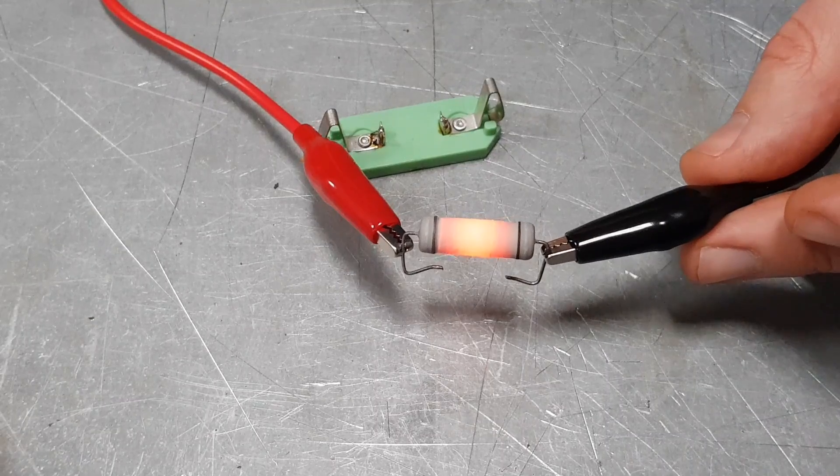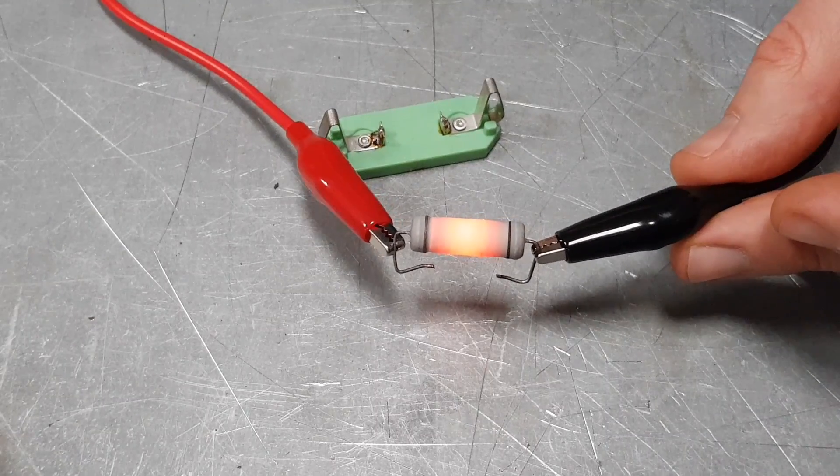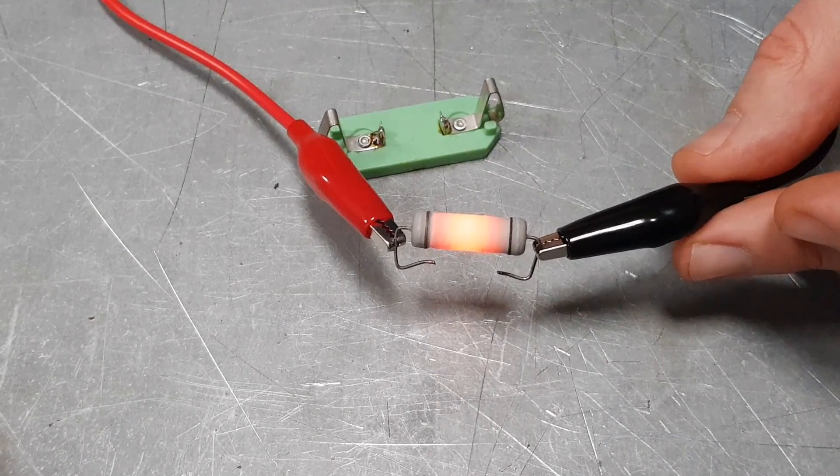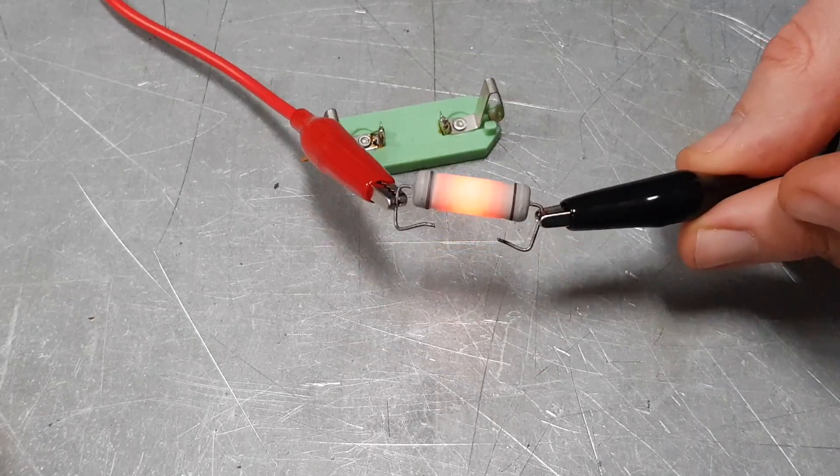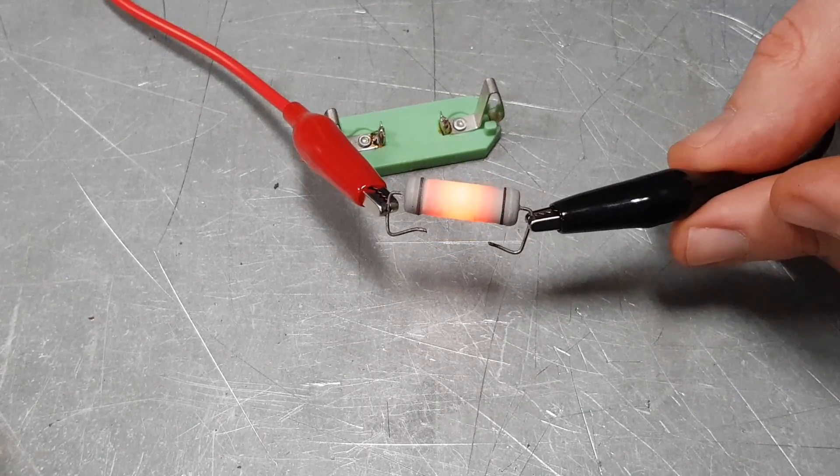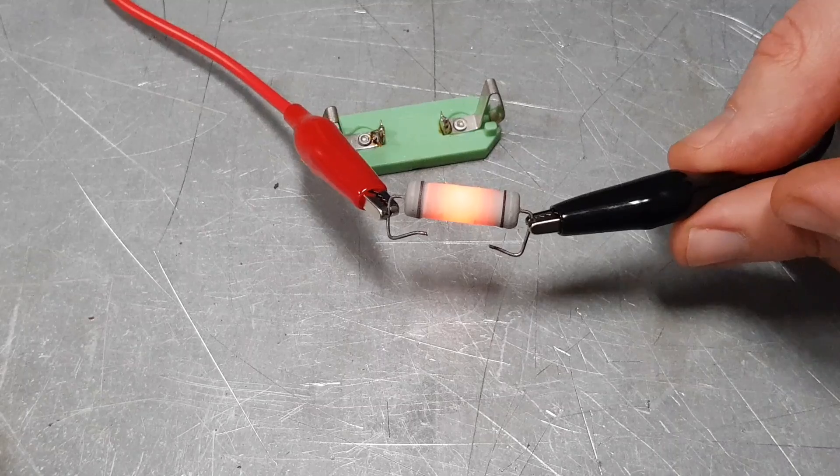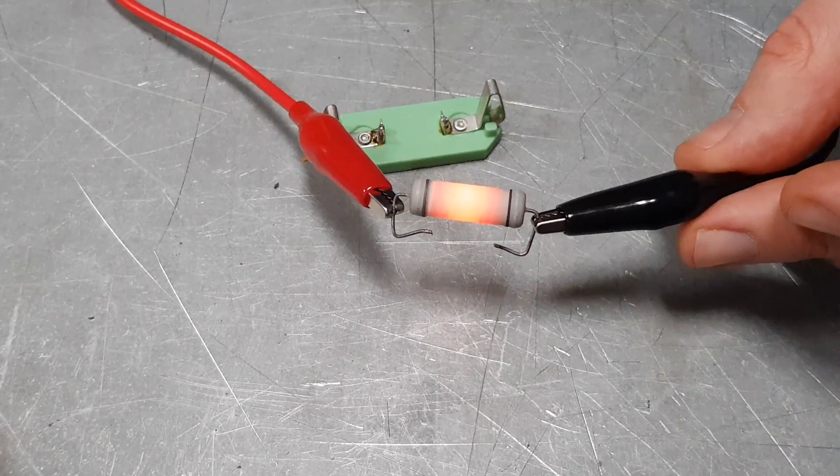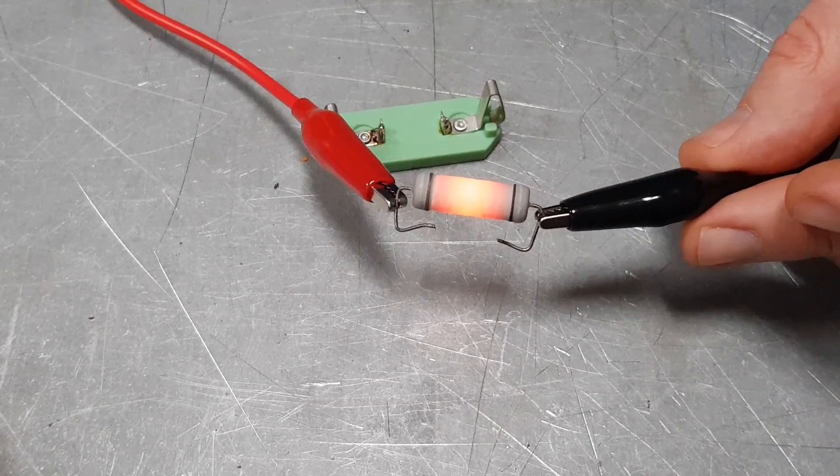That's right and the same thing applies to fuses of course because a fuse is just a very thin bit of wire. Too much current goes through it, gets hot and then it melts through, disconnects the circuit. Fantastic, so maybe now would be a good time for us to try and demonstrate what that would look like with a little fuse wire. Excellent idea, let's do it.